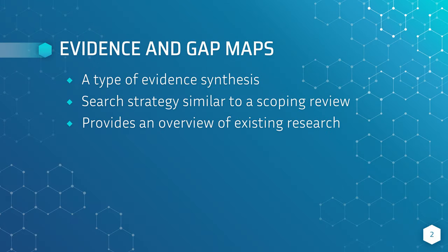Evimapper is particularly useful for a type of evidence synthesis called an evidence and gap map. This type of evidence synthesis relies upon systematic and scoping review methods. The search strategy in an evidence and gap map is typically designed to be comprehensive but not necessarily exhaustive. One of the main features is providing an overview of the research that exists.